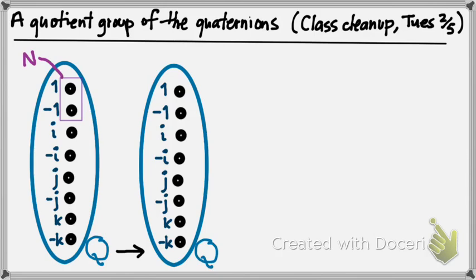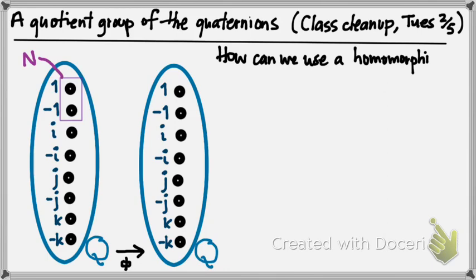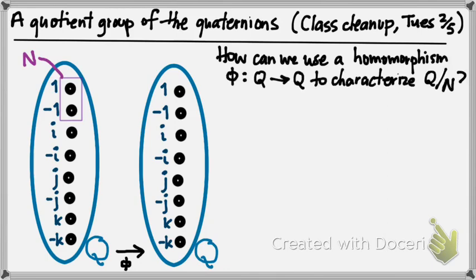Since that's a normal subgroup, we should be able to realize it as the kernel of some homomorphism out of Q. What we were trying to do at the end of class is construct such a homomorphism out of Q whose kernel is equal precisely to N. Our idea was that this homomorphism would go from a copy of Q to another copy of Q — in other words, an endomorphism of Q whose kernel is exactly N — and then use the first isomorphism theorem to characterize the quotient group Q mod N.